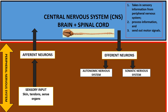Within the autonomic nervous system, the efferent neurons can be further subdivided into a sympathetic arm, composed of sympathetic neurons, which have a tendency of increasing physiologic functions such as heart rate, breathing, and GIT motility.